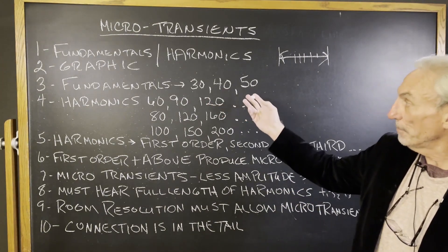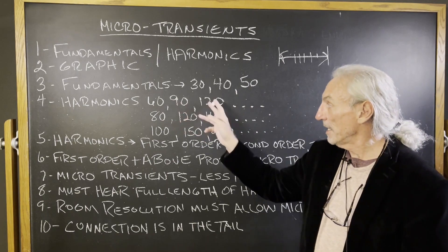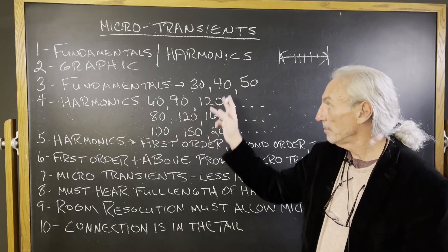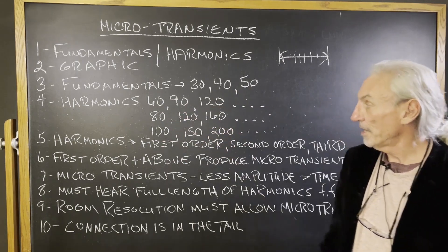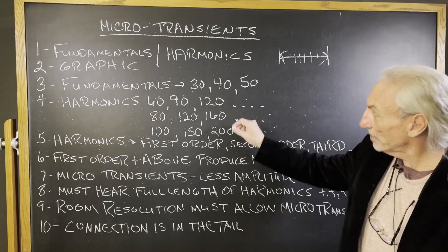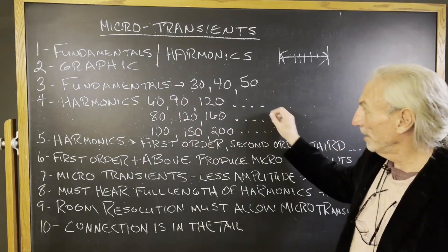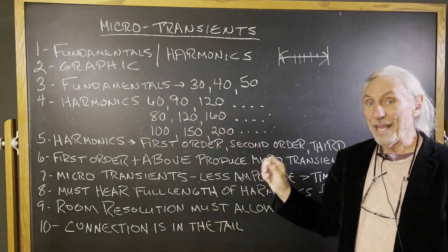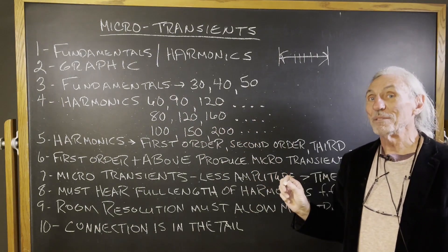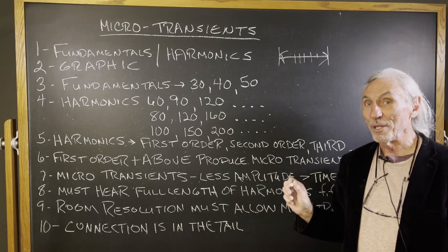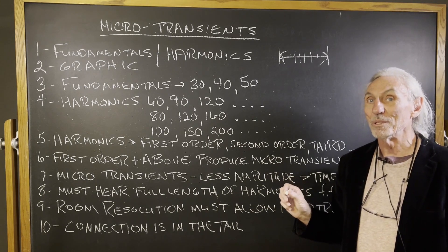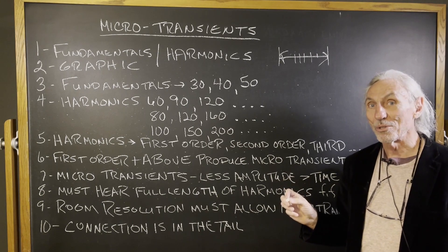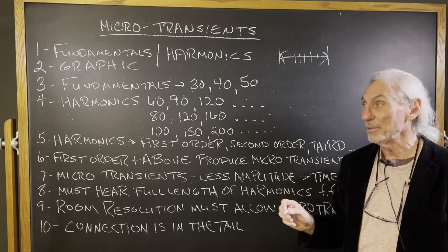For example, 30, 40, 50 fundamental, we're going to have 60, 90, 120 harmonics, 80, 120, 100, etc. So these are the critical areas that we have to focus on because they live the longest. They're in the room the longest and they fit better in the room. So they're easily heard if you've got the resolution in the room to do it.